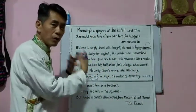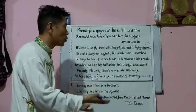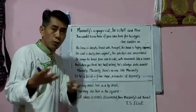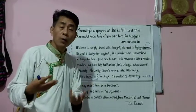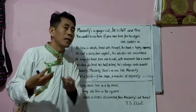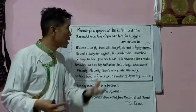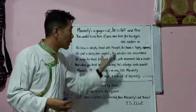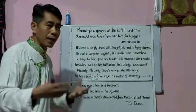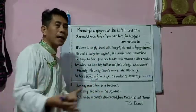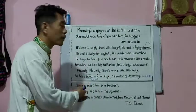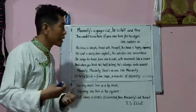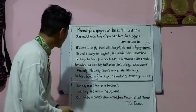Now let us continue with the remaining stanzas. In my previous session I gave three readings — I told you whenever you come across a poem, you have to read at least three times. Today, just because of the time, I'm going to read once. If you get time, you can go through this poem and read as many times as you can.